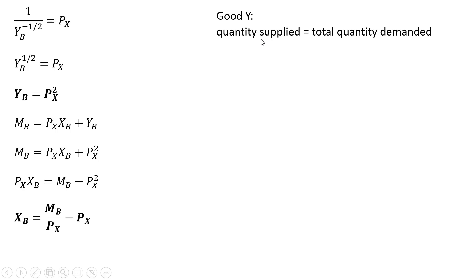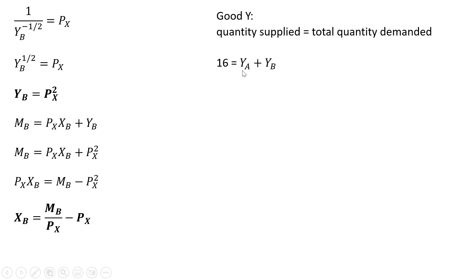Now let's look at the equilibrium for good Y. Equilibrium occurs where the quantity supplied — the total initial endowment of good Y — equals the quantity demanded. The quantity supplied is 16: consumer A had 8 units and consumer B had 8 units, so 8 plus 8 is 16. On the right-hand side, the demand for good Y from consumer A is 0, and consumer B's demand for good Y is the price of good X squared. Taking the square root of both sides, the price of good X equals 4.